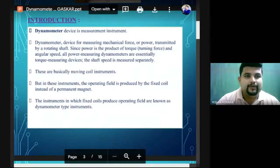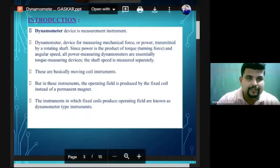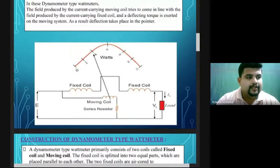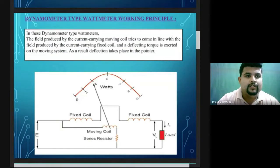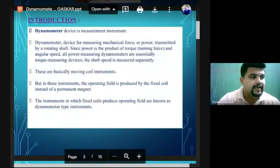The wattmeter is an indicating type instrument. The electrical power being measured in the dynamometer type instrument is what we are studying today. This instrument has two coils: a fixed coil and a moving coil. The purpose of these coils is that one carries current and one responds to voltage — one produces magnetic field with the help of current, and the other with the help of voltage.